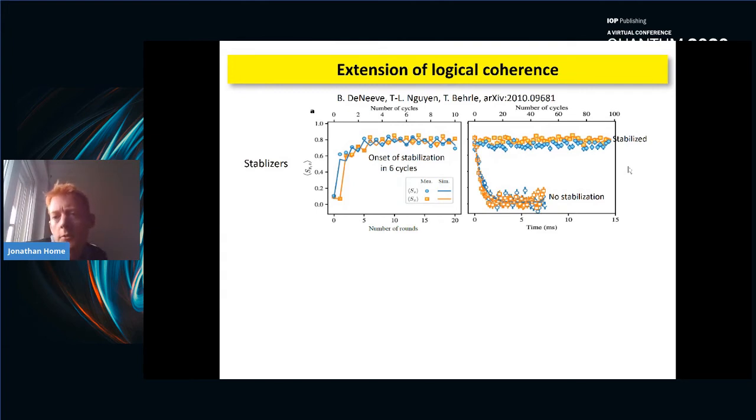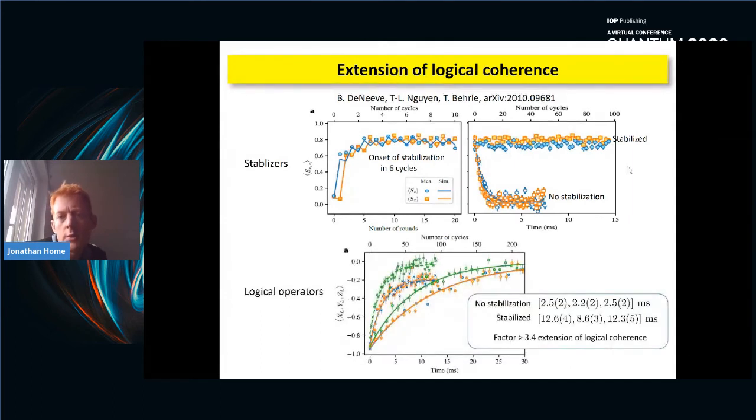So, of course, that's the stabilizers. What we would really like to know is can we improve logical coherence? And so we apply a similar experiment now, but we monitor as a function of the number of cycles the logical operators for logical eigenstates that we prepare. So these dashed curves and this data here is showing X and Z and the Y data for a square GKP code, where we haven't applied the stabilization. And then this data here is where we are applying the stabilization. And what you see is that the coherence has been significantly lengthened. In fact, with no stabilization, we get coherence times on the level of two, two and a half milliseconds. And with the stabilization, we improve that up to sort of the Y quadrature, which is the worst. It's about 8.6 milliseconds. And for the others, it's around 12. So here is a factor of three and a half extension of the logical coherence time in our system.